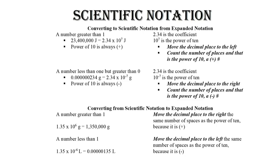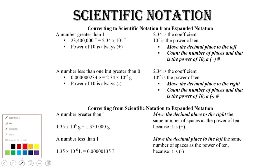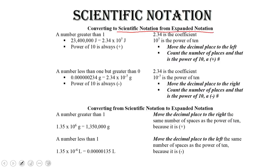If I would like to convert to scientific notation from normal or expanded notation, if the number is greater than one — as in this number here, 23,400,000 joules — then we can see that the scientific notation is 2.34 times 10 to the 7. Well, how do we figure this out?